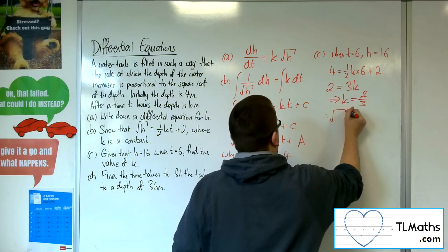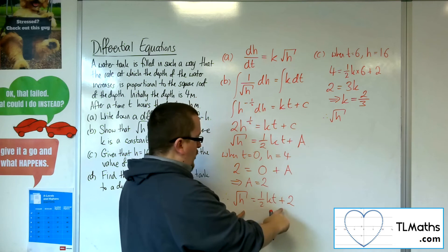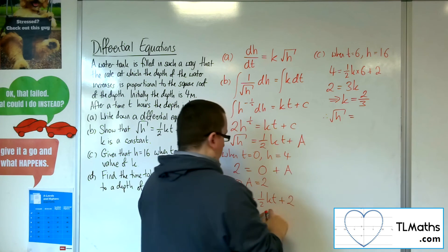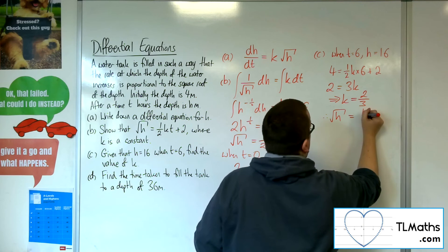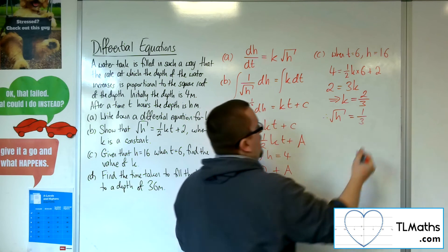So therefore, I've got an equation here of root h is equal to 1 half of k, which is 1 half of 2 thirds. So that's 1 third t plus 2.